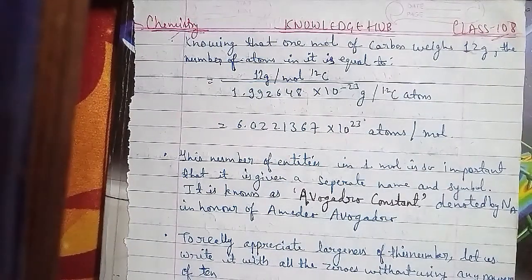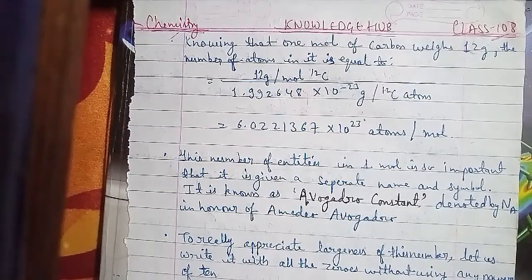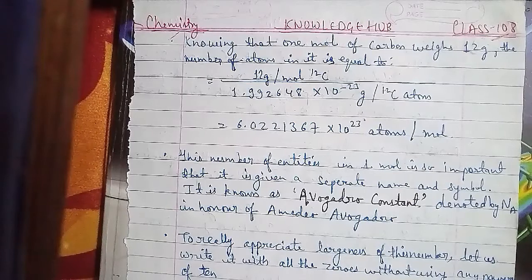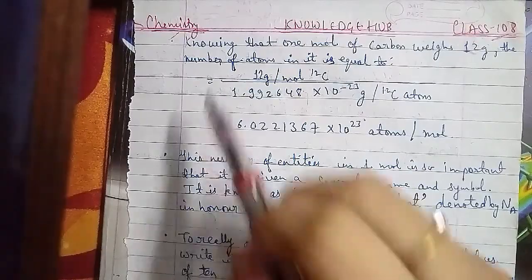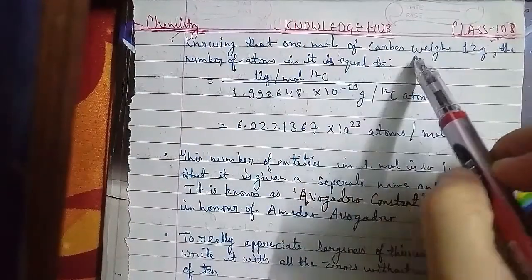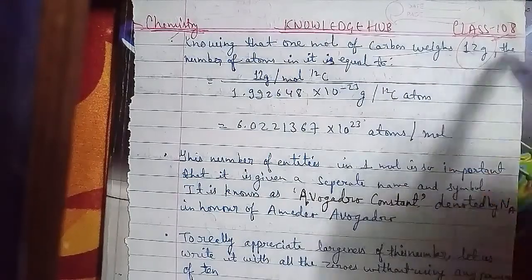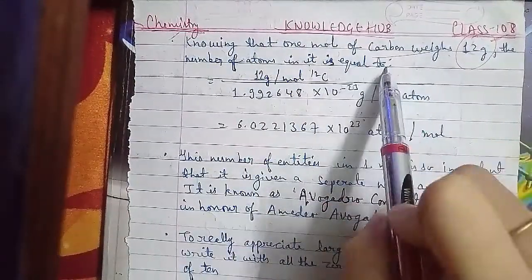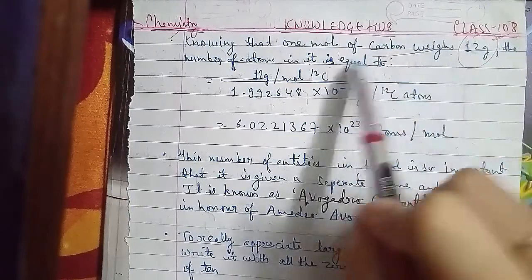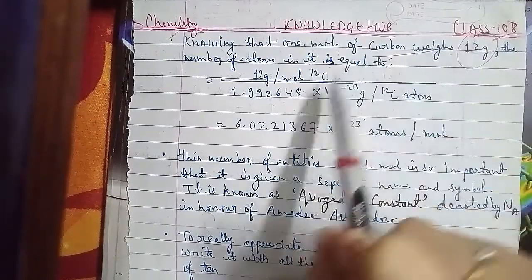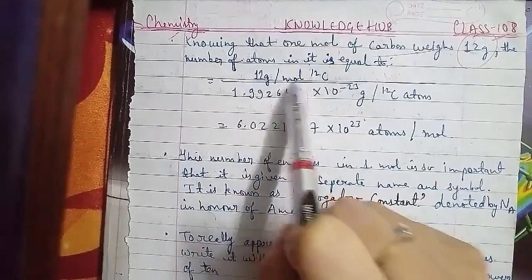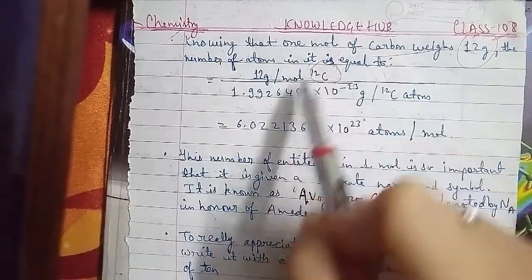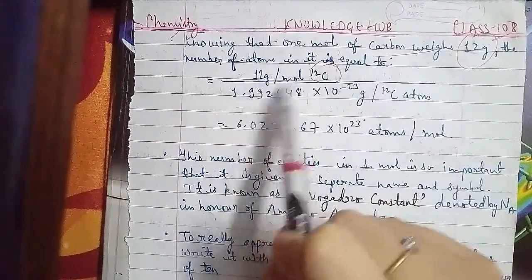Let's start today's lecture. You know that one mole of carbon has a weight of 12 grams. The number of atoms in it — basically, one mole of carbon weighs 12 grams. This is equal to 12 grams per mole. The mass of one carbon atom is 1.992648 × 10⁻²³ grams, as I told you in the last class.